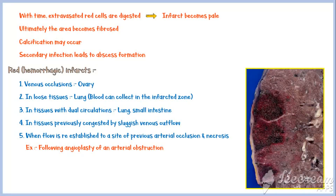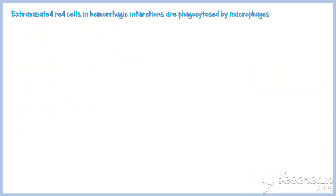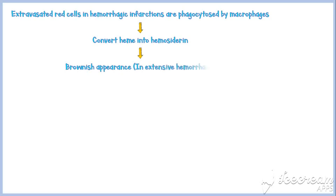This image shows a hemorrhagic infarction of the lung. Appreciate the dark red color in the periphery, in contrast to the previous image of pale infarction. With time, extravasated red cells in hemorrhagic infarctions are phagocytosed by macrophages, and they convert heme into hemosiderin. With extensive hemorrhage, this hemosiderin gives a brownish appearance to the infarct.